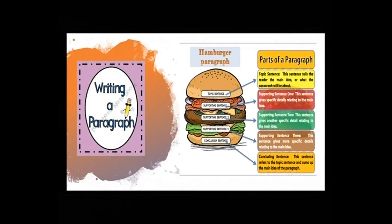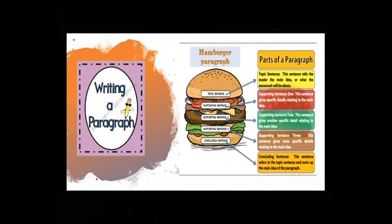Writing a paragraph: there is a topic sentence — this sentence tells the reader the main idea or what the paragraph will be about. Next is supporting sentence 1, which gives specific details relating to the main idea. Supporting sentence 2 gives another specific detail. Last is the concluding sentence, which refers to the topic sentence and sums up the main idea. This is called the hamburger paragraph.